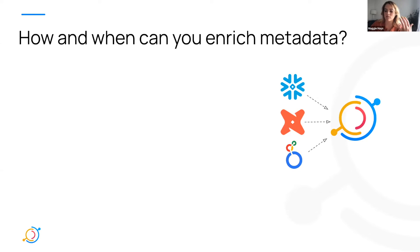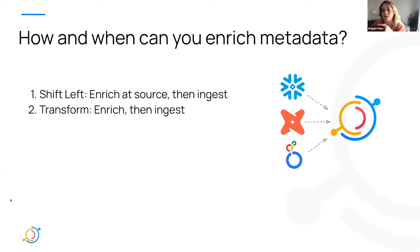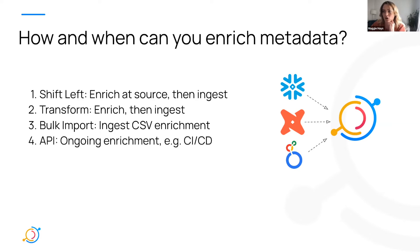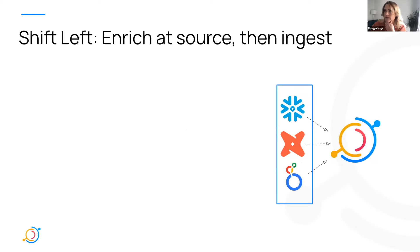So those are all the ways you can enrich metadata. But practically speaking, how do you actually do it? You can enrich at the source and then ingest, you can transform your metadata prior to ingestion, you can do a bulk import using CSV enrichment, you can do ongoing enrichment via our API, or you can do manual enrichment ad hoc from the Data Hub UI.